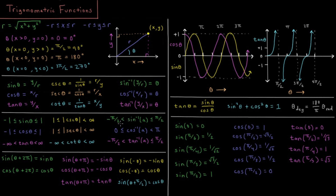For arcsine, we want to define it over a well-defined range, because eventually the values of sine and cosine start repeating, and we want a unique value assigned to each input. Typically for arcsine you define the domain as negative pi over 2 to pi over 2 radians, or negative 90 to plus 90 degrees. For arccosine, you typically define it from 0 to pi radians, or 0 to 180 degrees. And arctangent similarly often goes from negative 90 to positive 90 degrees.